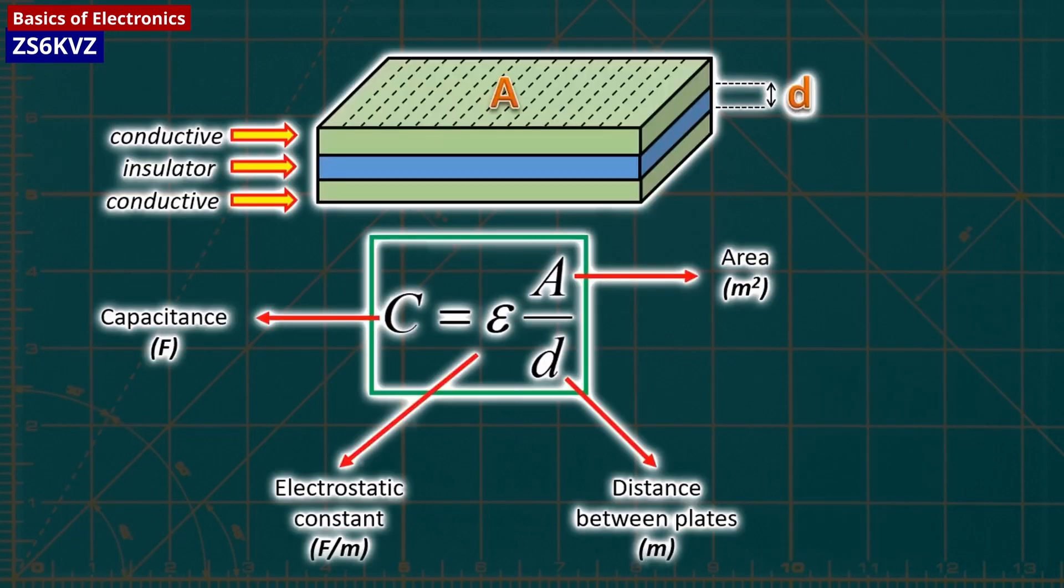Capacitors are measured in farads, with values typically expressed in picofarads (pF), nanofarads (nF), and microfarads (uF). These units are interchangeable, and a conversion chart can be useful.